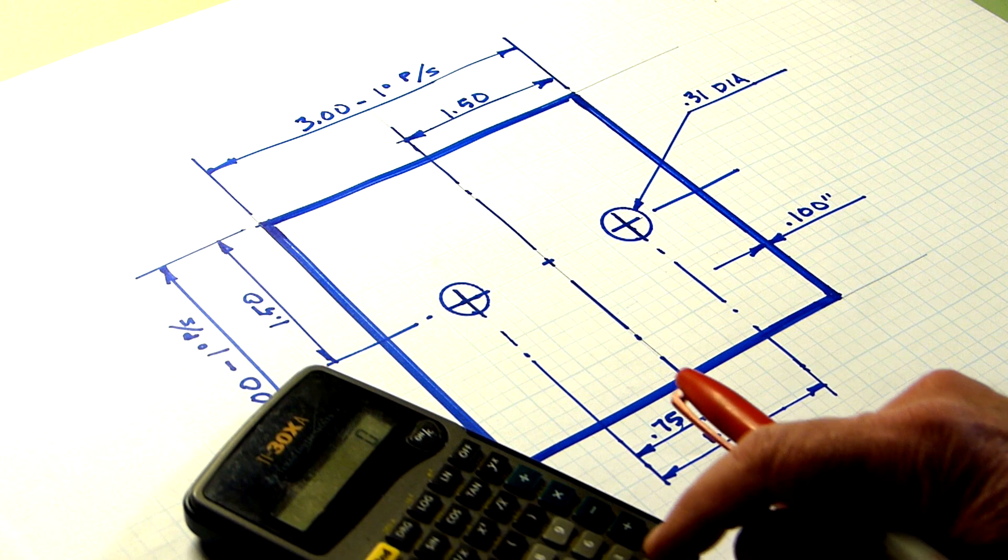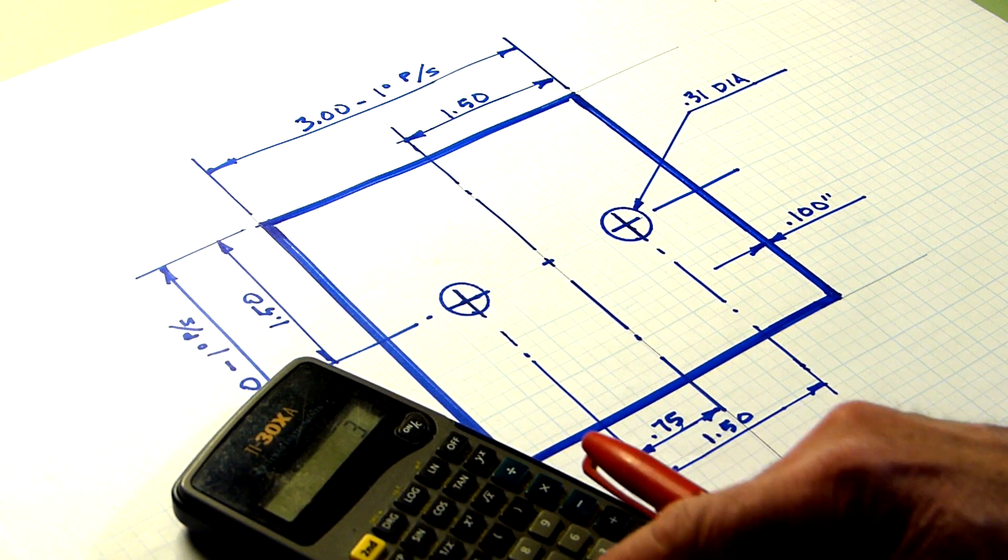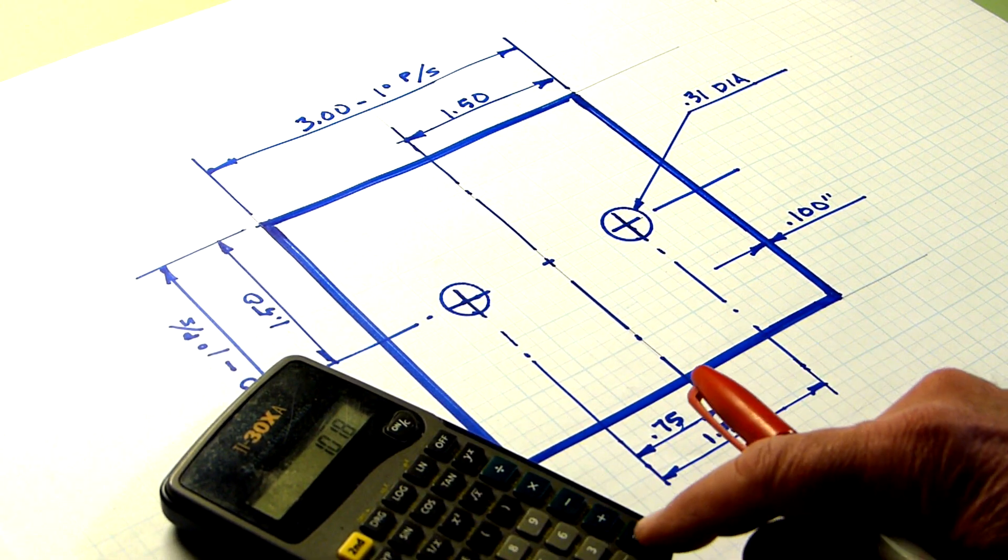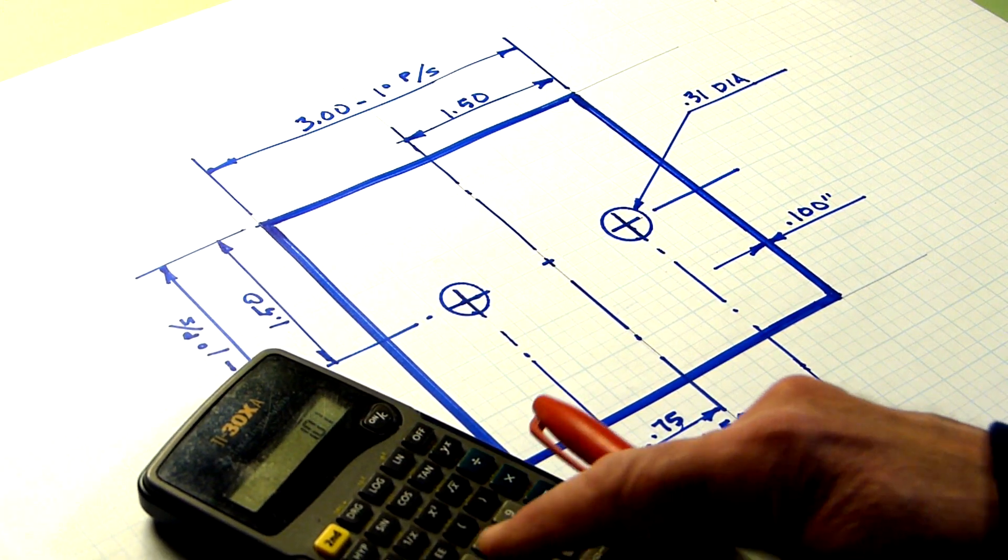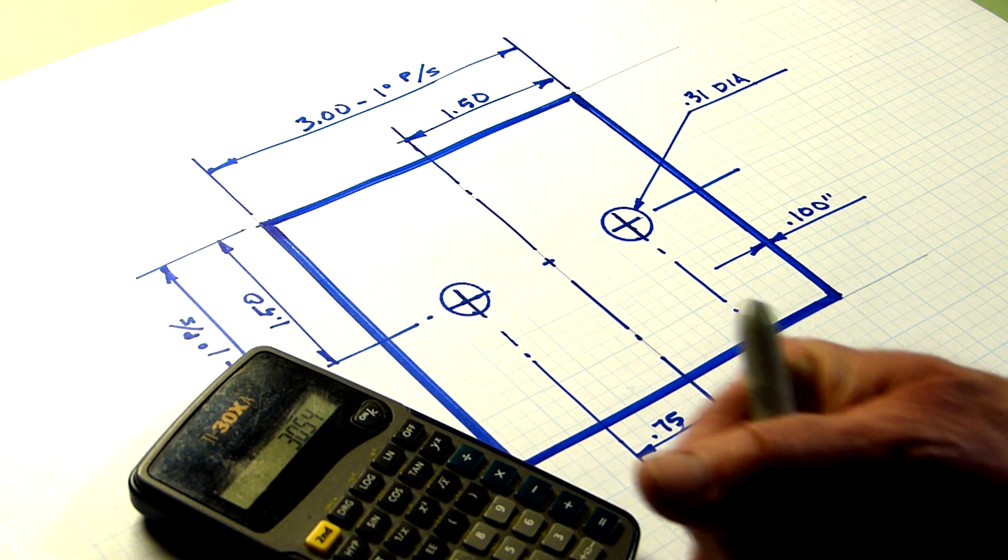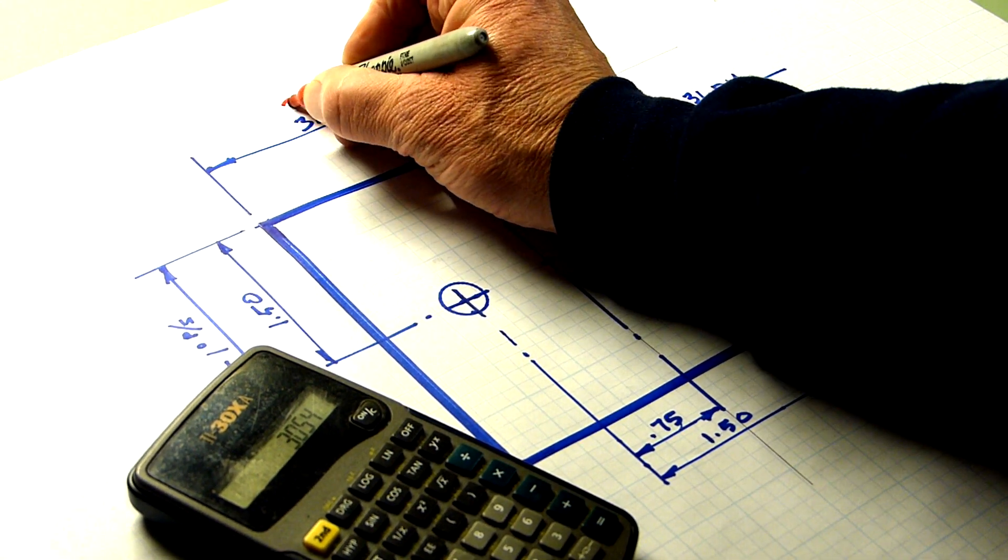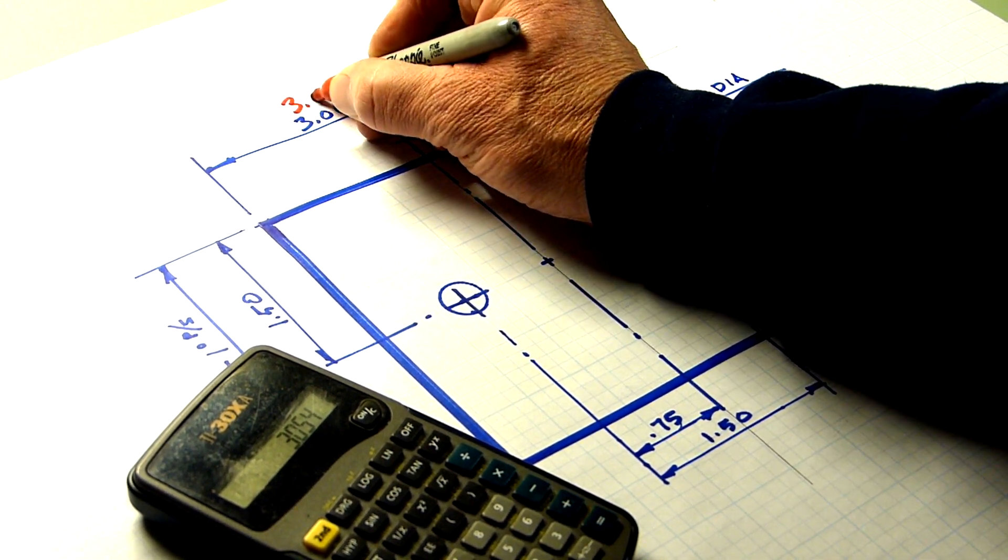So 3 inches times 1.018 becomes 3.054. That's the widest point of our cavity.